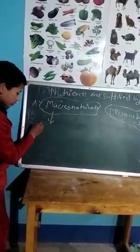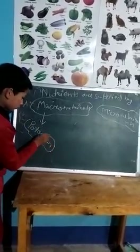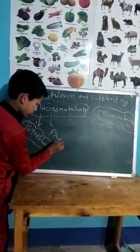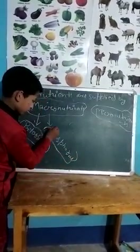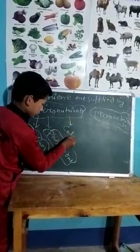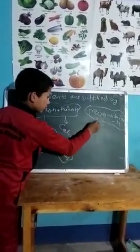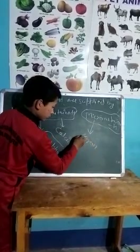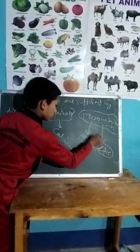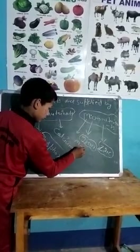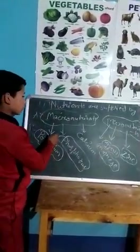Examples of macronutrients are potassium, phosphorus, and calcium. Examples of micronutrients are iron, zinc, and manganese. These are the examples of macronutrients and micronutrients.